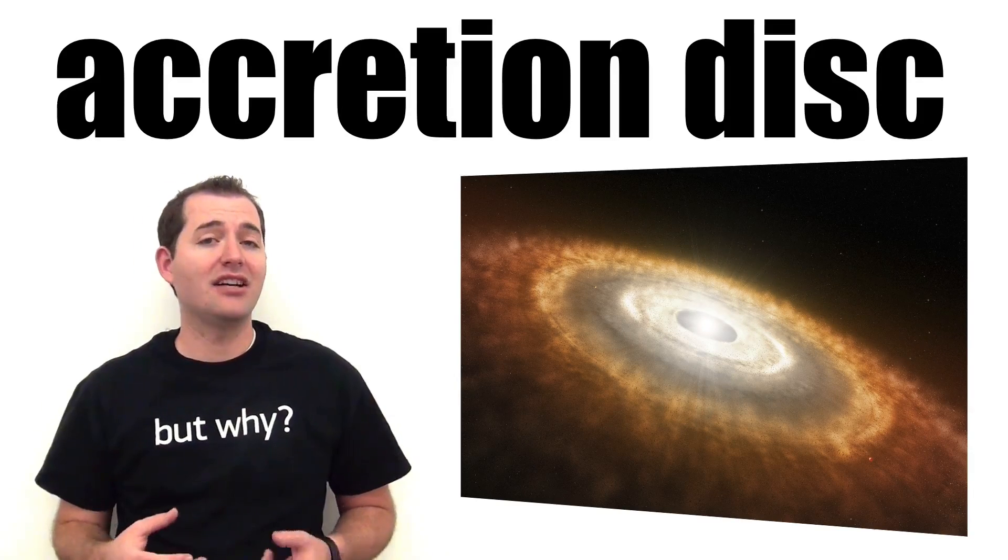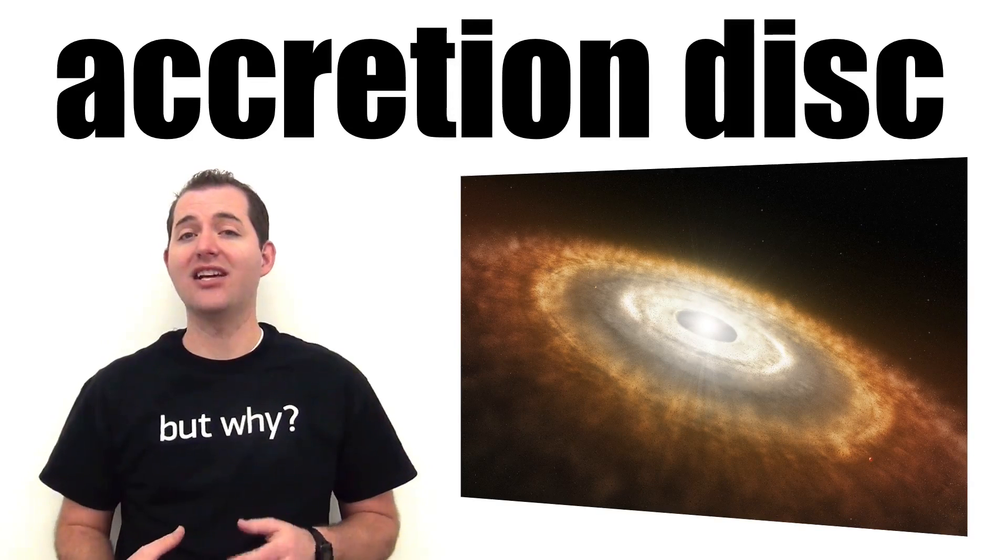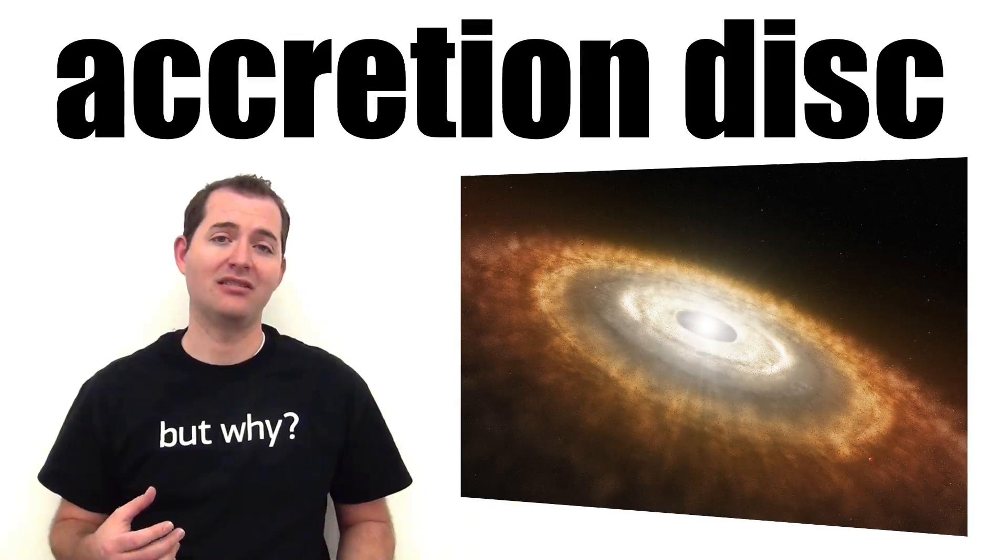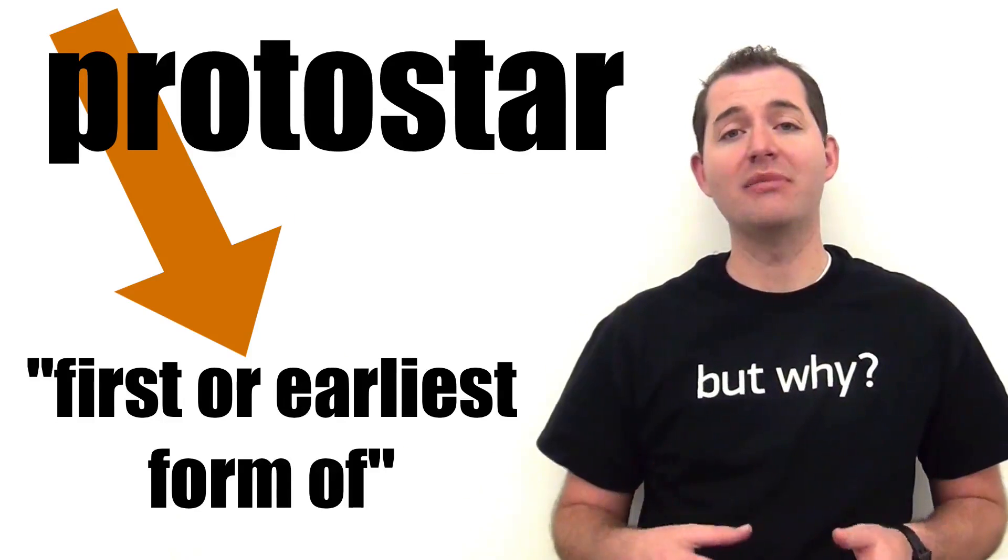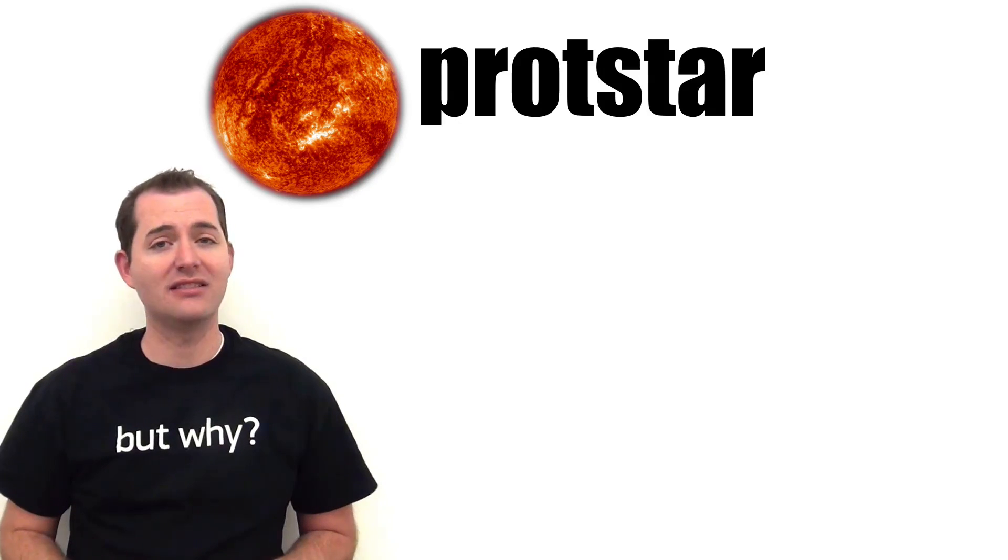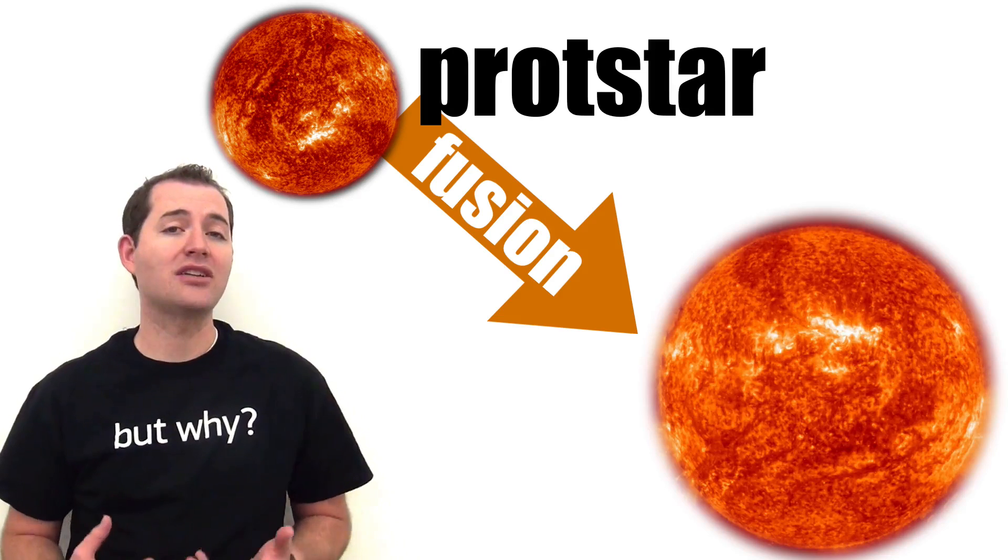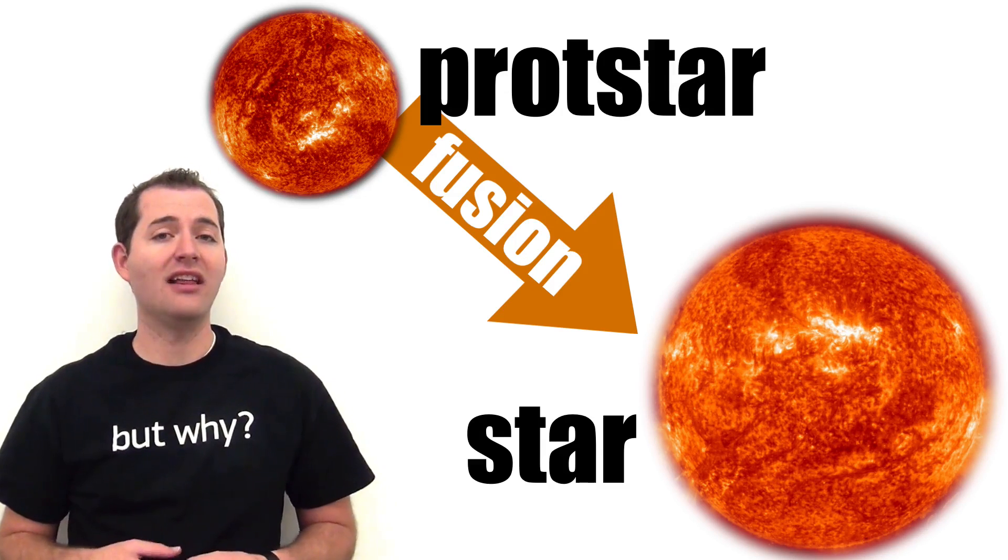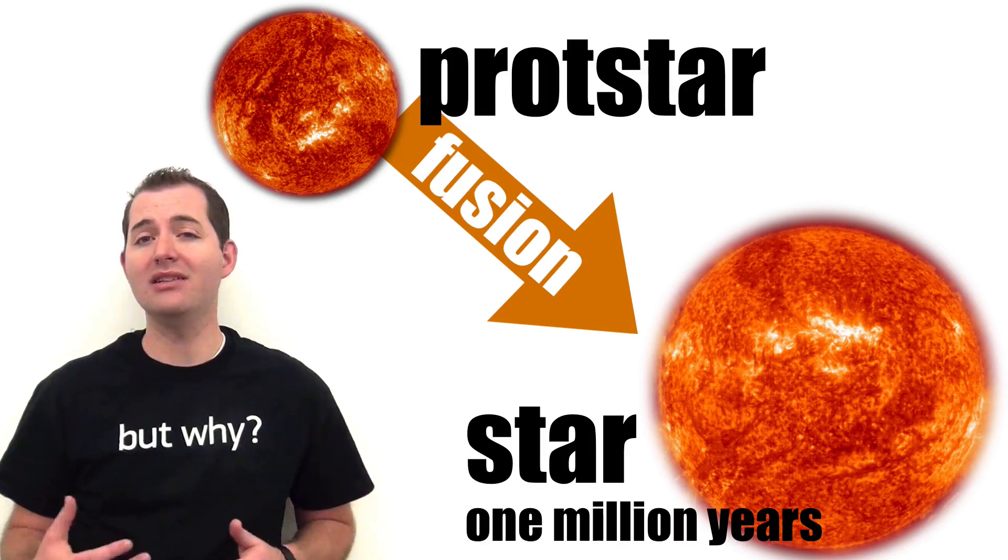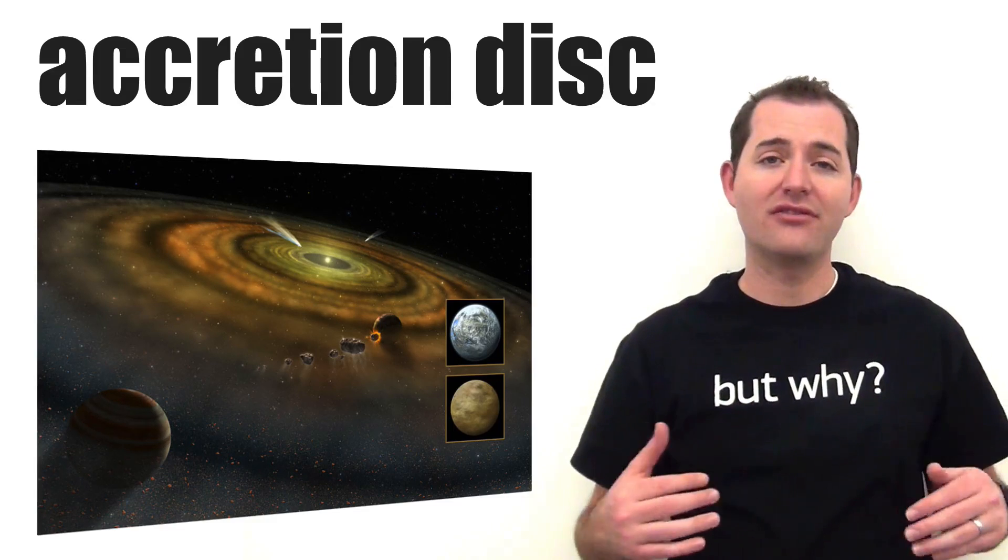All of this mass in the accretion disk continues to feed this central clump with more matter. This continues until it has enough mass to become a protostar. Proto in protostar means first or earliest form of, so this is the beginning of a sun in our solar system. This protostar at the center of this accretion disk will eventually get enough mass to begin the process of fusion, which then it becomes an actual star. For a star like our sun, this process takes about one million years to complete. Through this process, the accretion disk continues to orbit the protostar and the new sun and continues to flatten out as well.